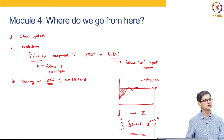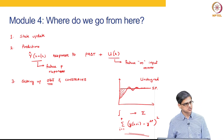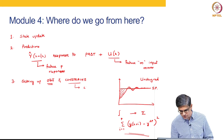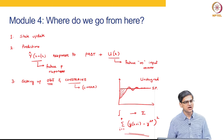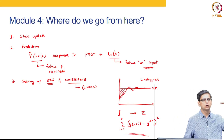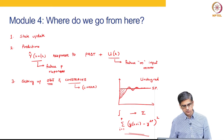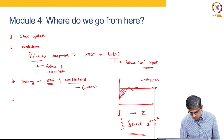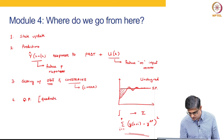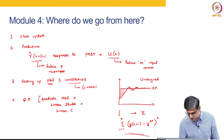Two lectures hence I will come back to this and formally define what the objective function is. Without going more into this, we are going to use linear constraints only. So in this course, for the most part, we are going to talk about a linear system with a quadratic objective function subject to linear constraints. Anything else we will talk about as an enhancement to MPC. We are also going to talk about how to solve this QP problem, which is quadratic objective plus linear model plus linear constraints.